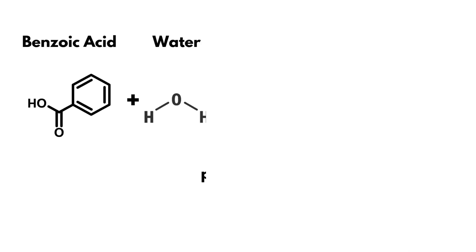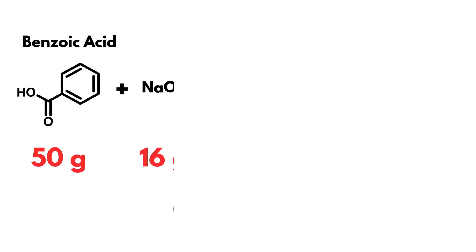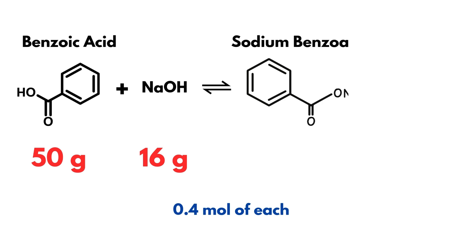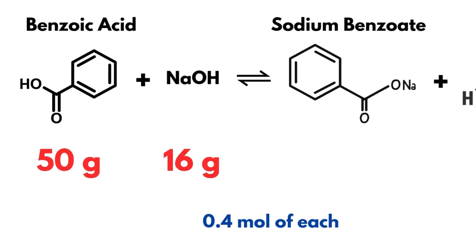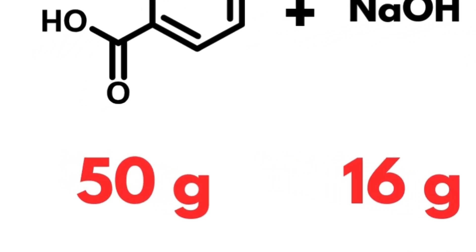When benzoic acid is added to water, it ionizes to form benzoate ions and hydronium. By reacting benzoic acid with sodium hydroxide, an acid-base reaction occurs where the sodium and hydrogen swap places, forming water and sodium benzoate. Now, I didn't have too many bottles of benzoic acid, so I decided to go with just 50 grams or 0.4 moles.